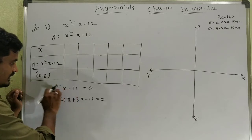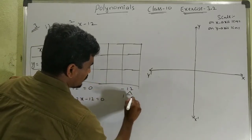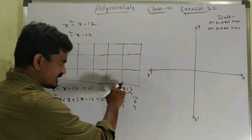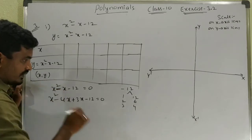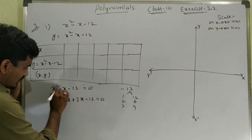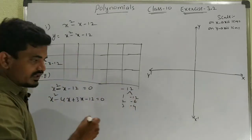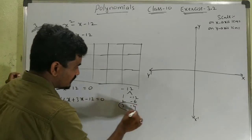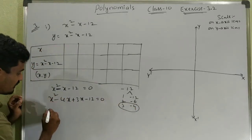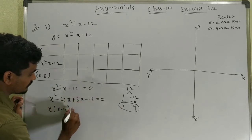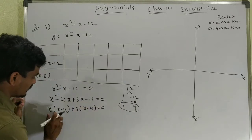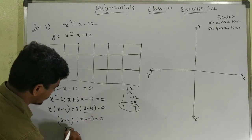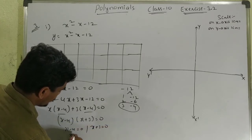Minus 12 into 1 is −12. The factors are: 1×12, 2×6, 3×4 — and 4×3 is 12. The symbol is minus. So −4 and +3: let's check. Taking x − 4 common and x + 3, we get (x − 4)(x + 3) = 0. So x − 4 = 0 and x + 3 = 0, giving x = 4 and x = −3.